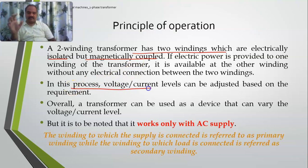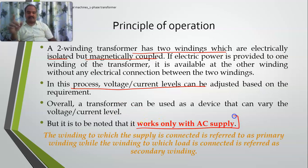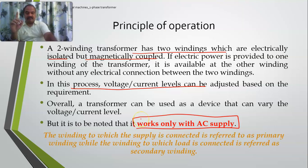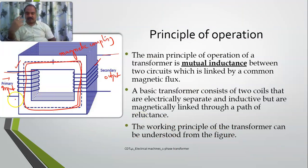What I have shown you is two windings — one is an input winding and the other one is an output winding. These two are magnetically coupled. So a two-winding transformer has two windings which are electrically isolated but magnetically coupled. If power is provided to one winding, it is available to the other winding without a direct electrical connection, and in this process voltage levels and current levels can be adjusted based upon the requirements. It works only with AC supply — I will explain why in the next slide. The winding to which input is given is called the primary winding, and the winding from which output is taken is called the secondary winding.